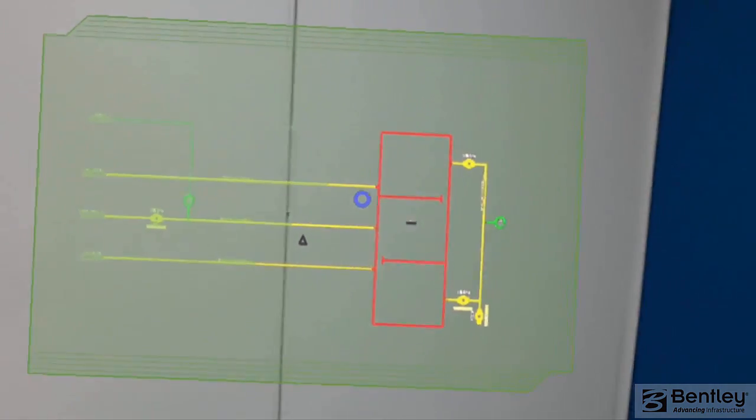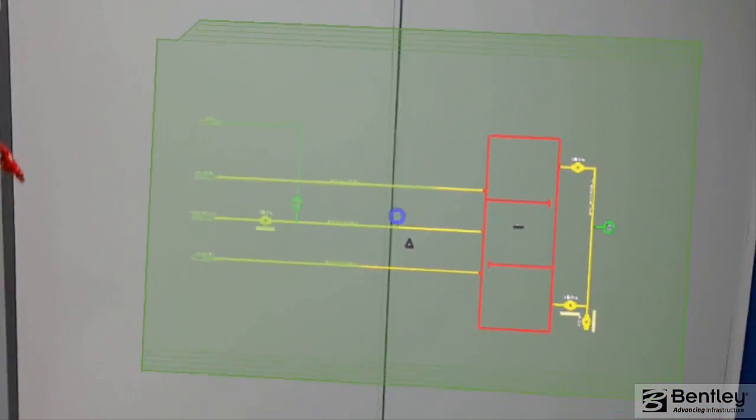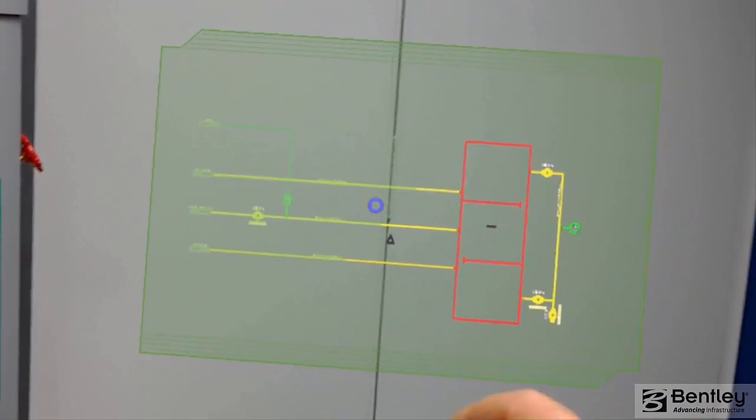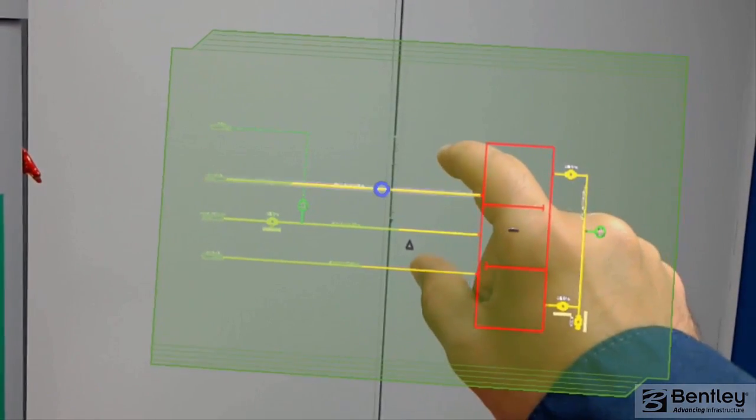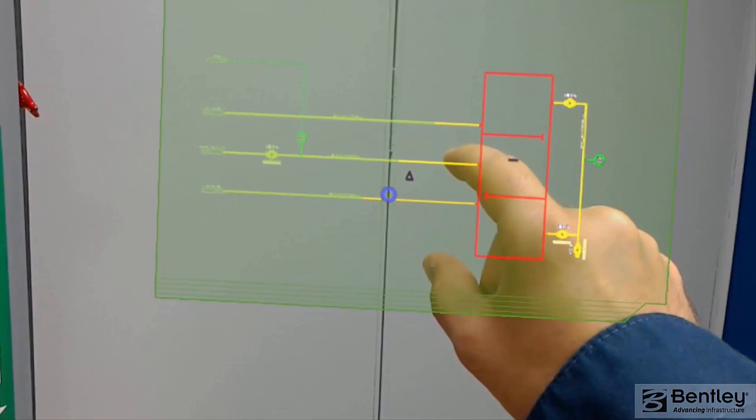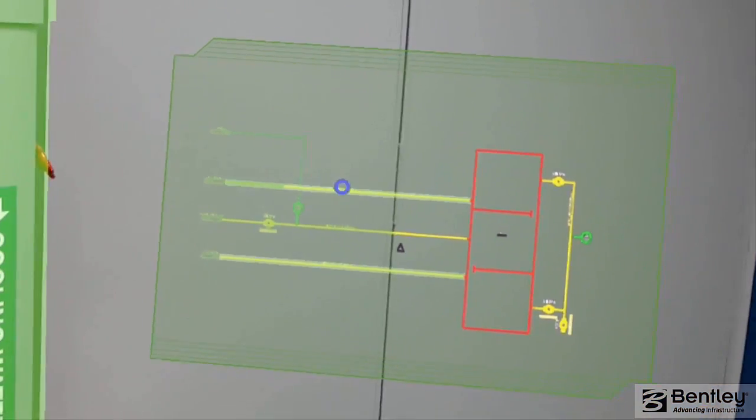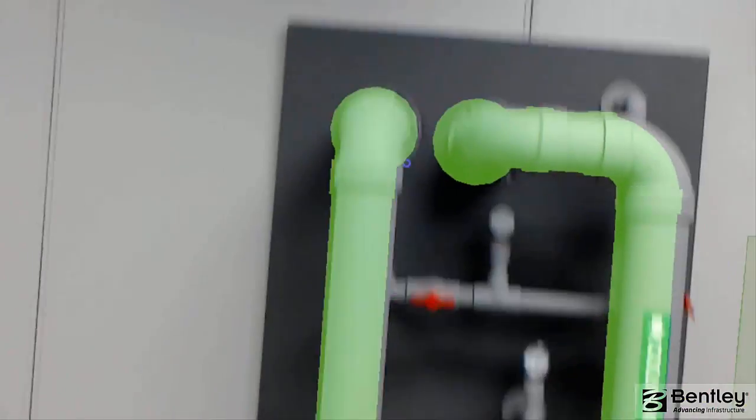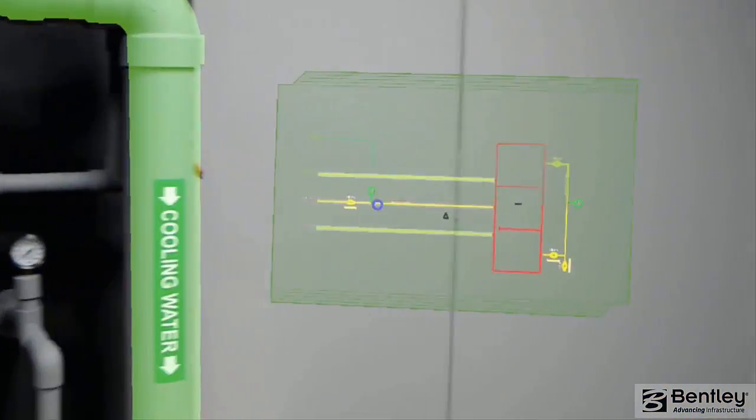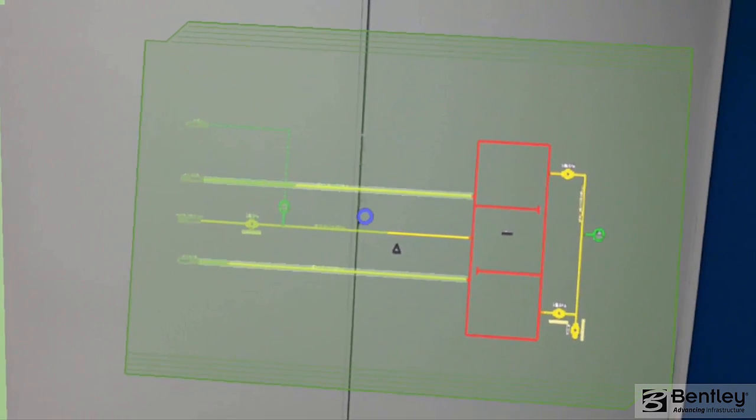So a solution to this could be to add a bypass between those two pipes. Well, let's do that. Okay. Those are the pipes in question. Okay. Add bypass.